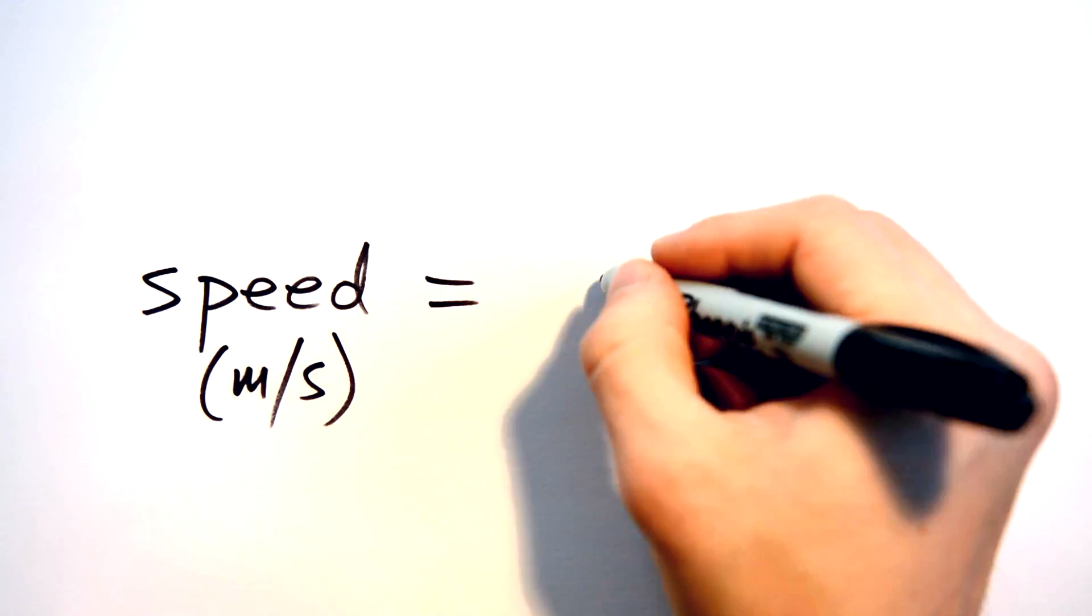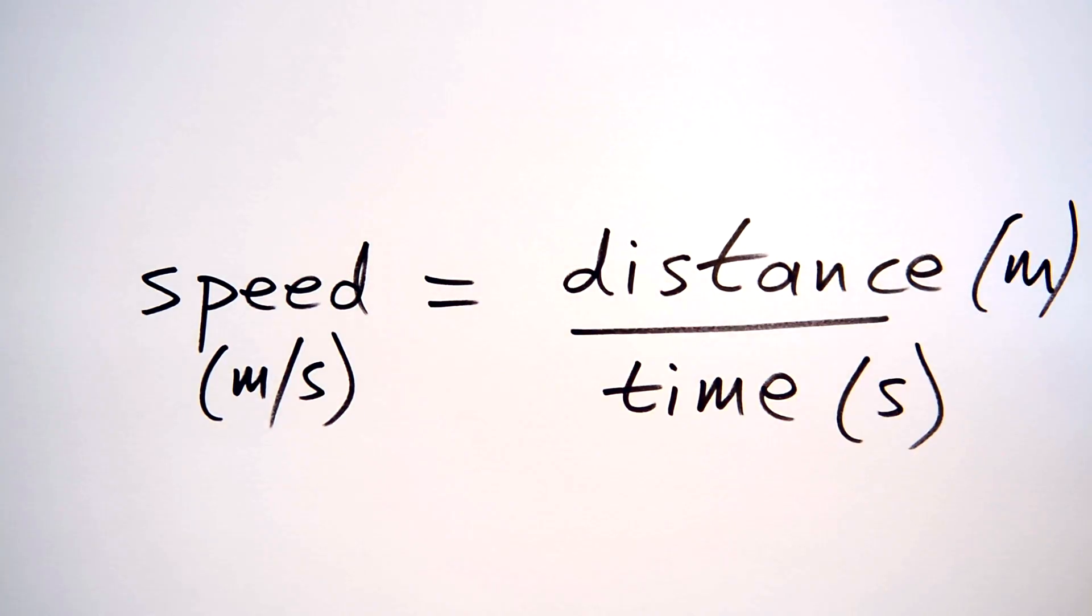Speed is of course equals to distance divided by time, or you might say distance over time. That means if you know how long it took for something to travel a certain distance you can calculate its speed.